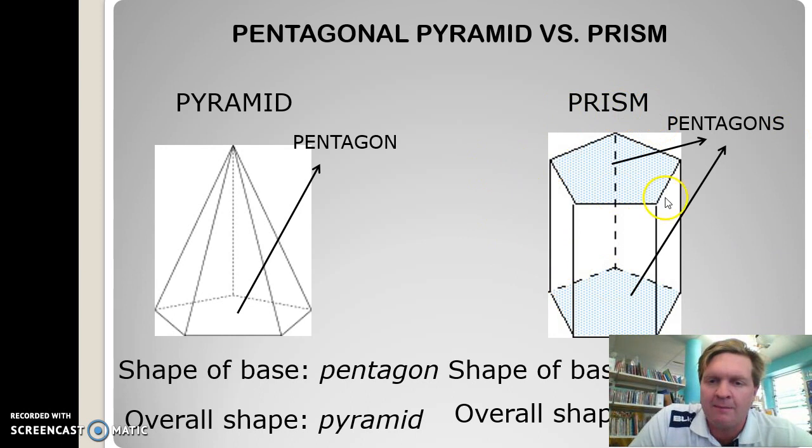The prism here. Two sides are the same. In this case, they're both pentagons. What shape are they? Pentagon. Is it a solid shape? Yes, it is. That's why we call it a pentagonal prism.